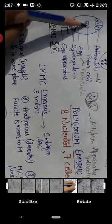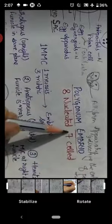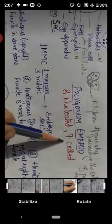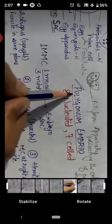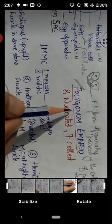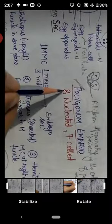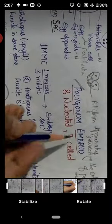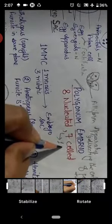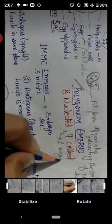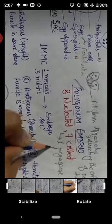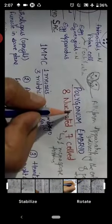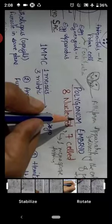If we look at this embryo sac, it is 8-nucleated: 3 cells on top, 3 cells on the bottom, and 2 nuclei in the central cell. So it is an 8-nucleated, 7-cell structure. This 8-nucleated 7-cell structure of the embryo sac formed from one functional megaspore is called the Polygonum type of embryo sac. There are 13–14 types of embryo sacs altogether.